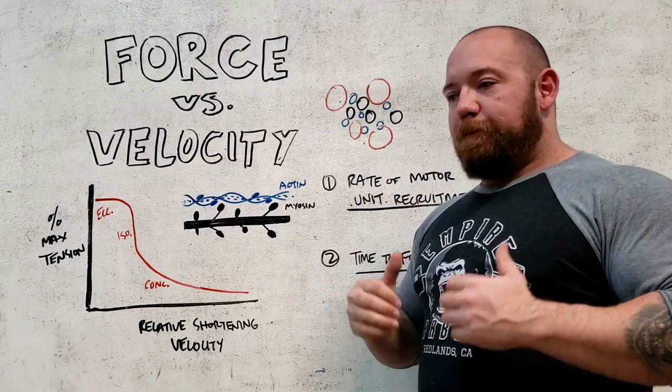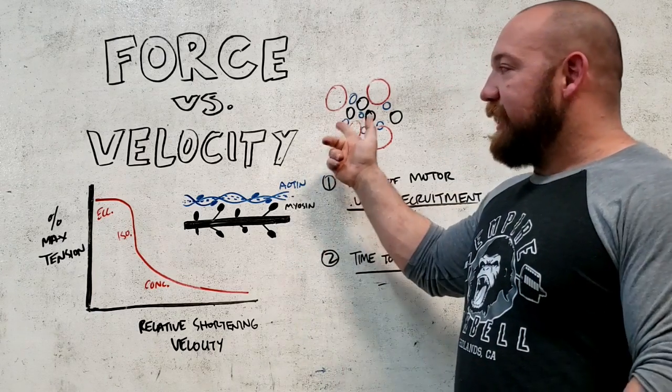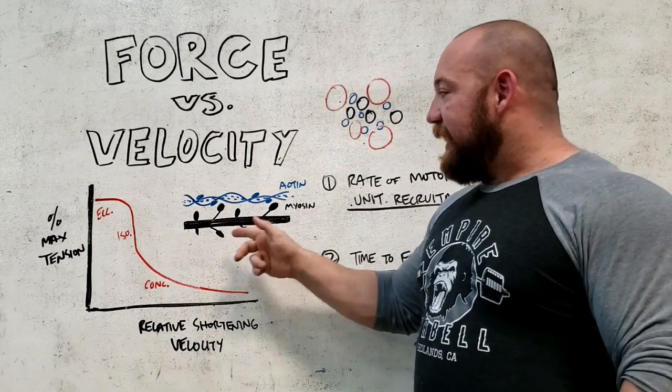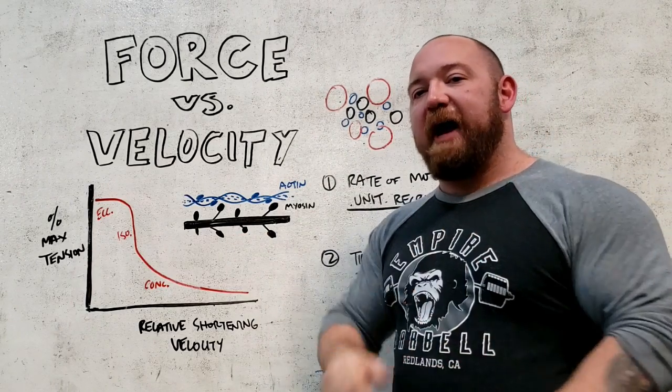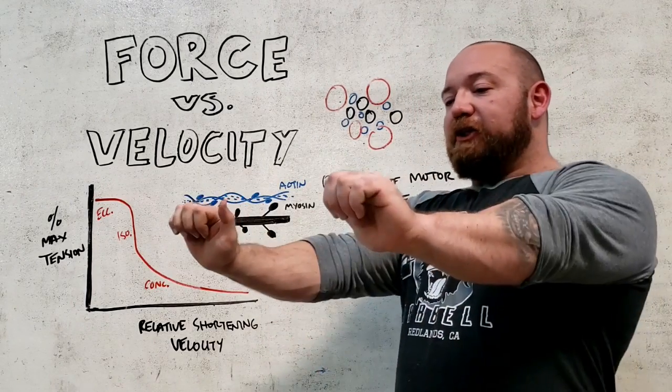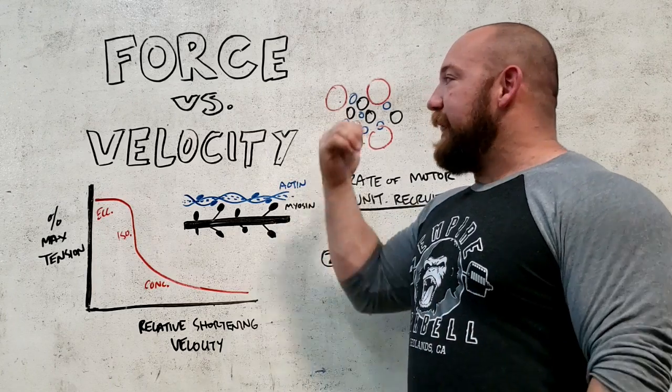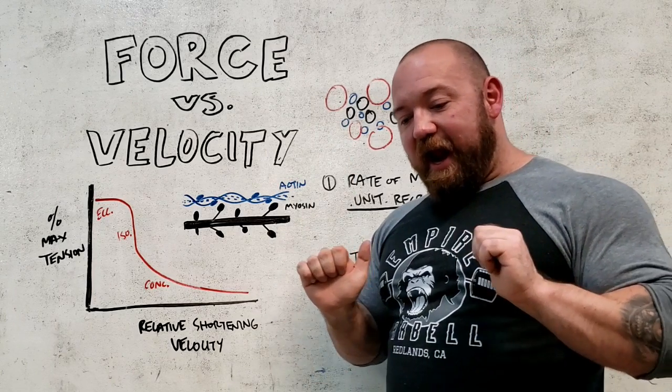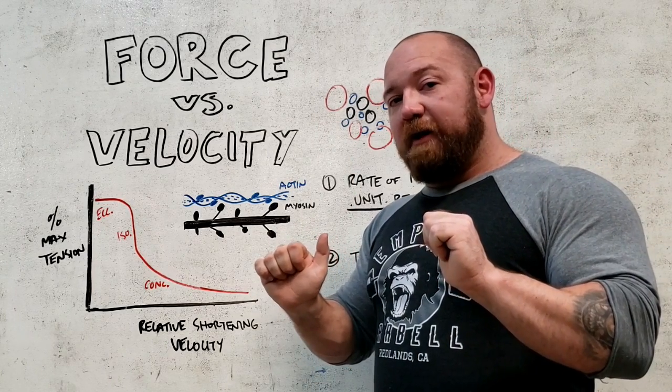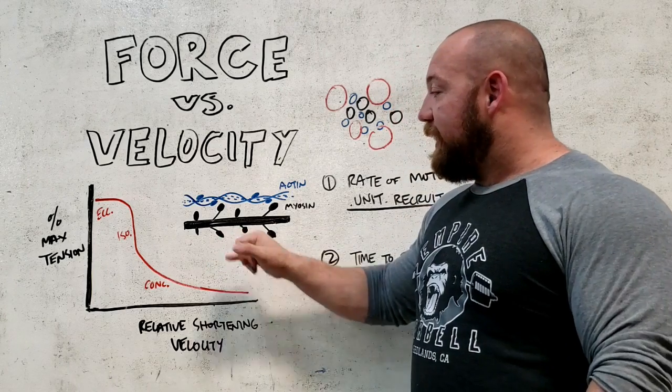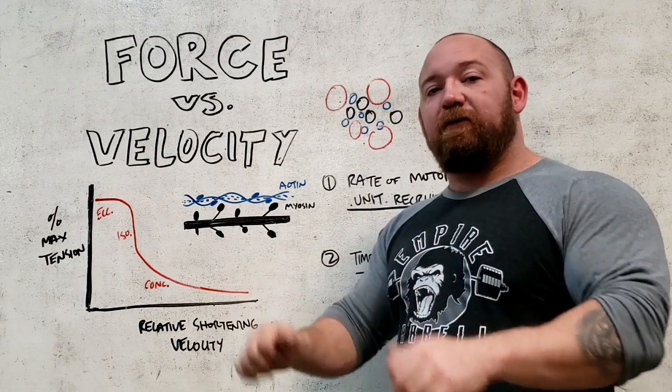Now, on a speed rep, as the weight gets moving, you're still not at maximal fiber recruitment. And as you accelerate, these are starting to slide past each other. So as you finish the rep, you didn't reach maximal fiber recruitment. And at every phase of the lift after you got it moving, you have these little mechanical arms that are just along for the ride.